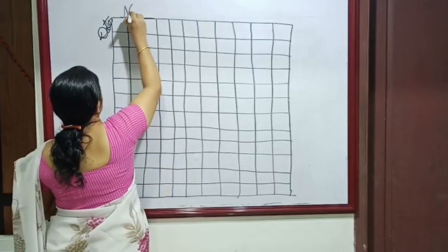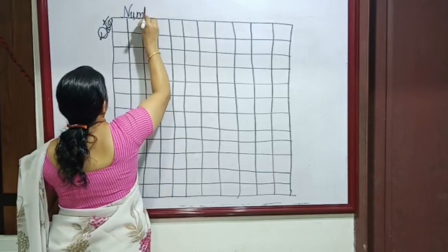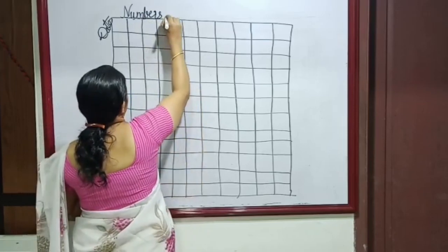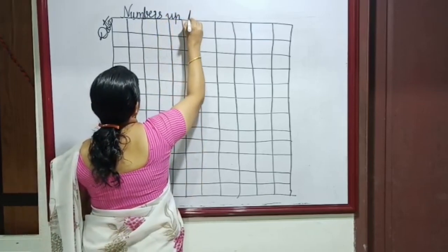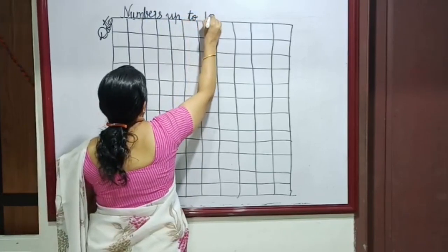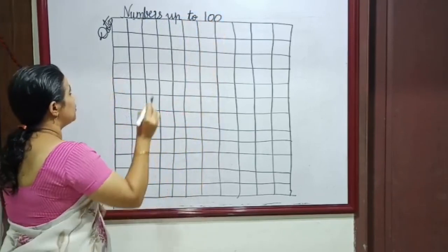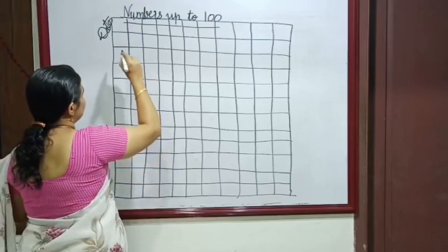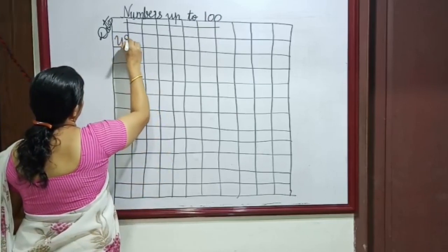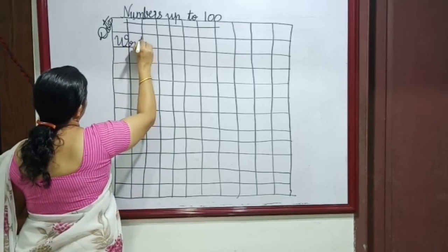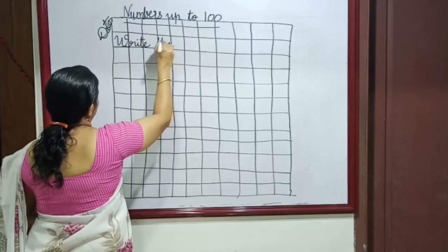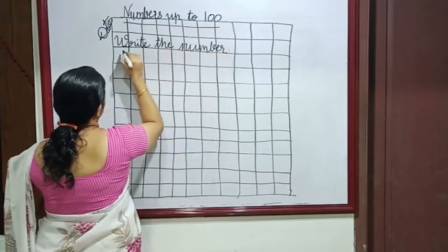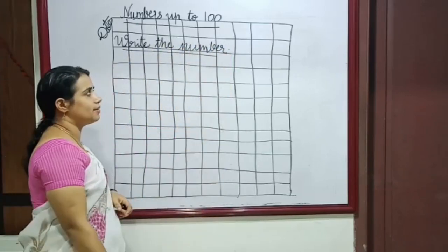N, U, M, B, E, R, S — numbers up to 100. Under letter, then side heading. Write the number. Underline. Write the number.